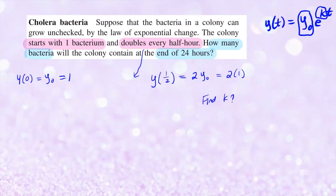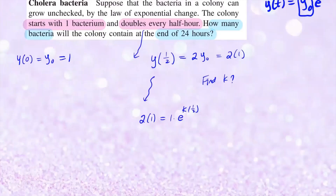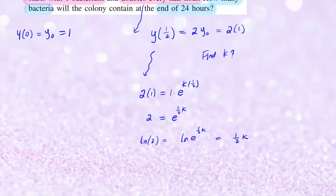Let's go ahead and find k. Using that information, two times the initial amount equals the initial amount times e to the k times one-half. Algebraically, we can divide both sides and simply write two equals e to the one-half k. Taking the natural log on both sides: ln of two equals one-half k. Multiplying both sides by two gives us k equals two times ln of two.